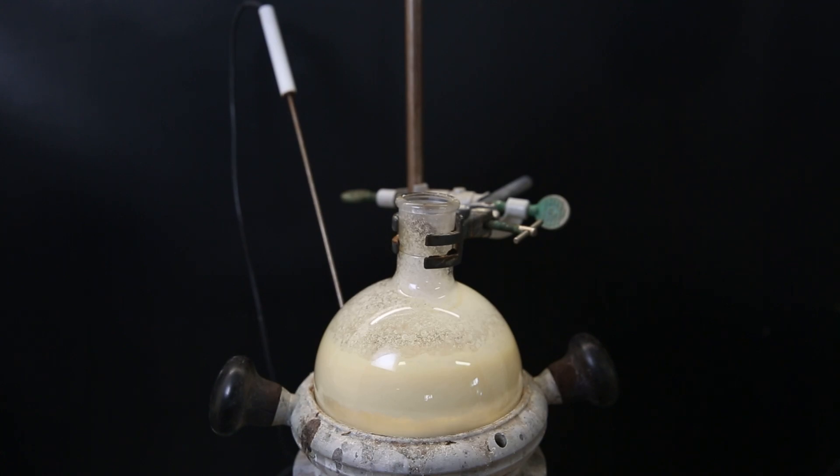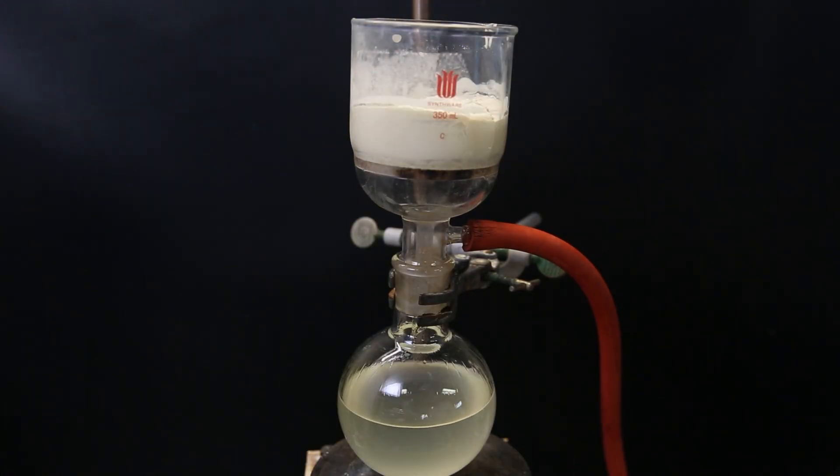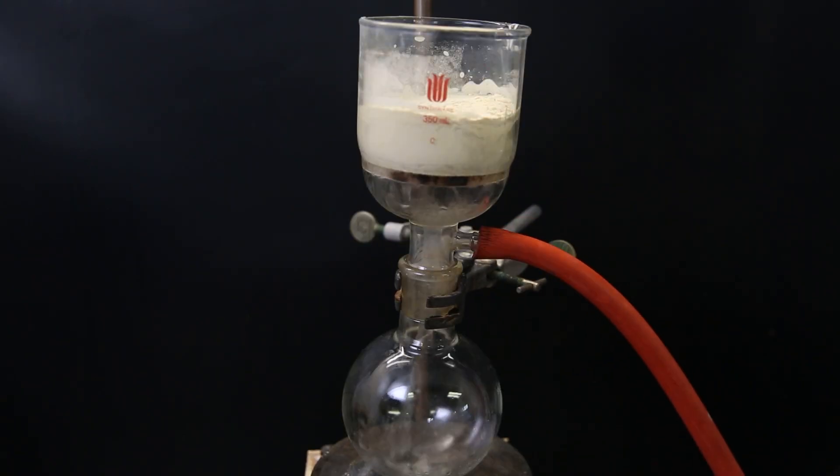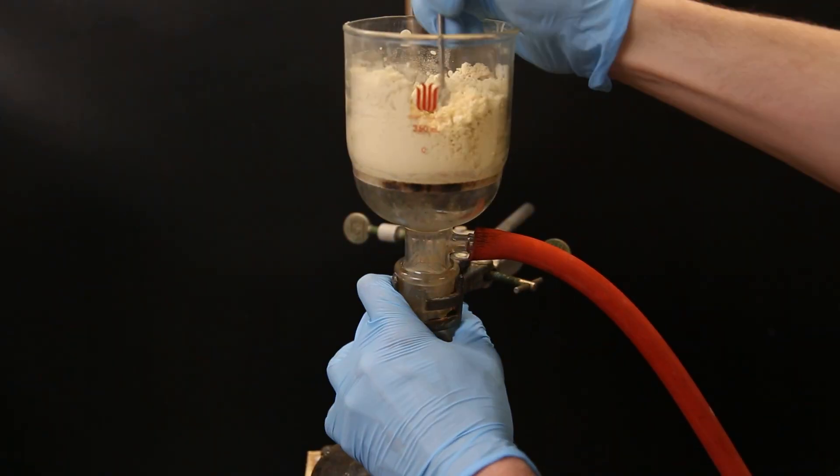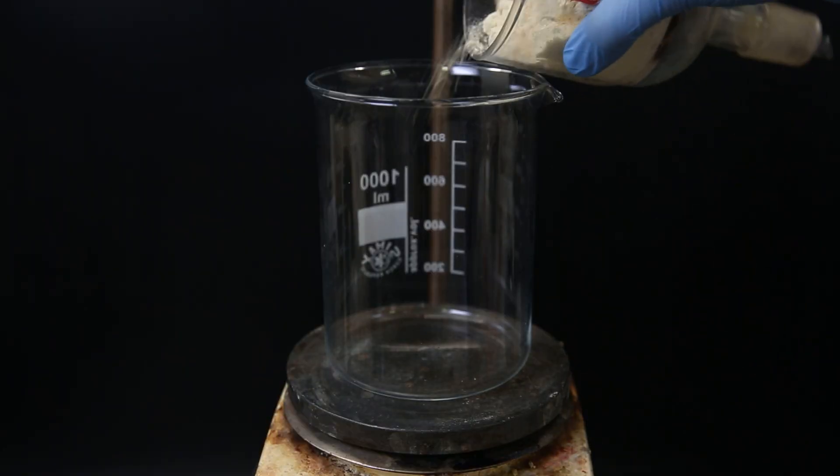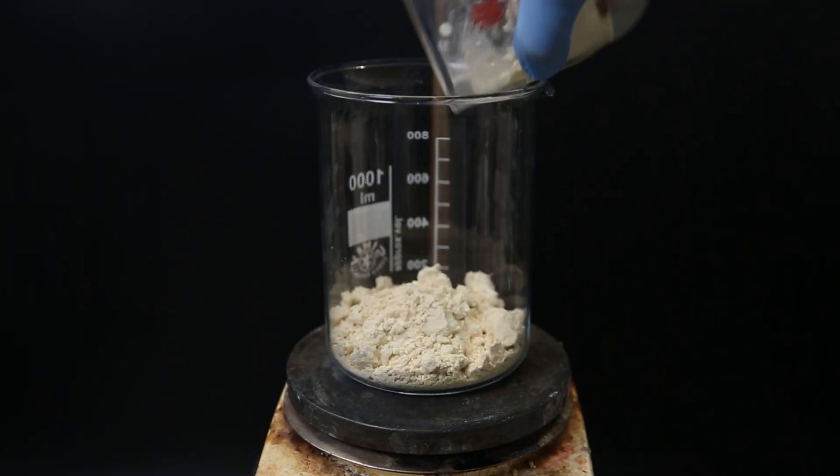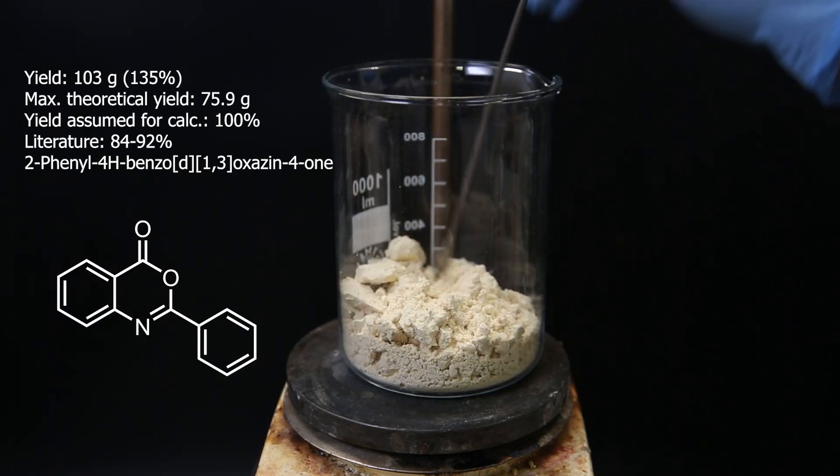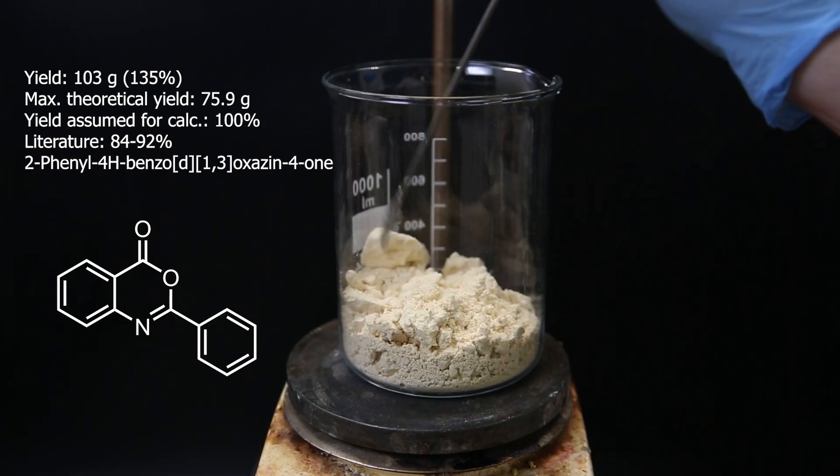When that's done, I set it up for vacuum filtration to collect all the solid and wash it with more hexane. I dry it on the filter by pulling a vacuum constantly, which will evaporate the remaining hexane. I then pour the powder into a beaker, and evident by its weight, it still contains some remaining solvent. Or, I have created mass out of nothing. Both are equally plausible.